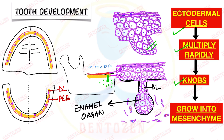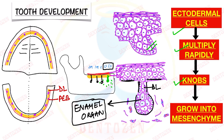All 20 enamel organs — for the 20 deciduous teeth — first appear in the mandibular anterior region, and then sequentially, just as the teeth develop, the enamel organs develop in sequence. Now let's look at what changes occur in this enamel organ.